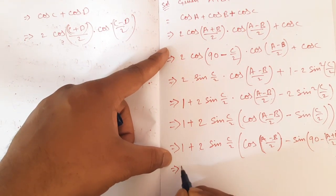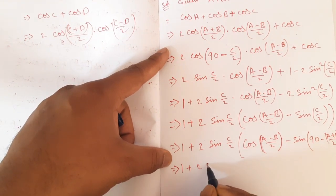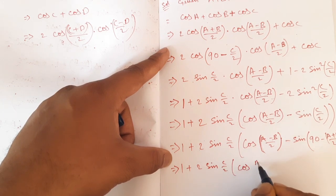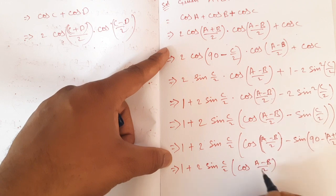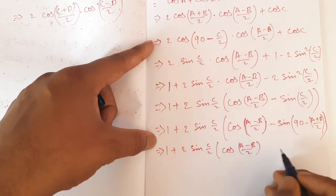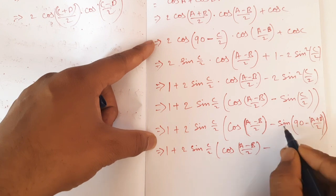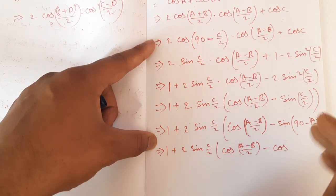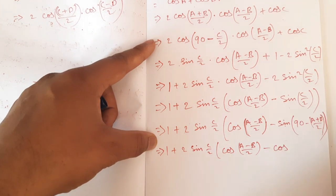1 plus 2·sin(C/2)·cos((A−B)/2) minus sin(90° − (A+B)/2).